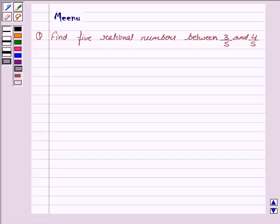Hi and welcome to the session. Let's solve the following question. It says find 5 rational numbers between 3 by 5 and 4 by 5.